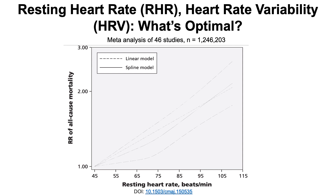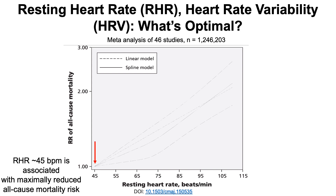Resting heart rate and heart rate variability — what's optimal? First, we're looking at a plot of the relative risk for all-cause mortality against the resting heart rate in beats per minute. A resting heart rate of about 45 beats per minute is associated with a maximally reduced all-cause mortality risk.